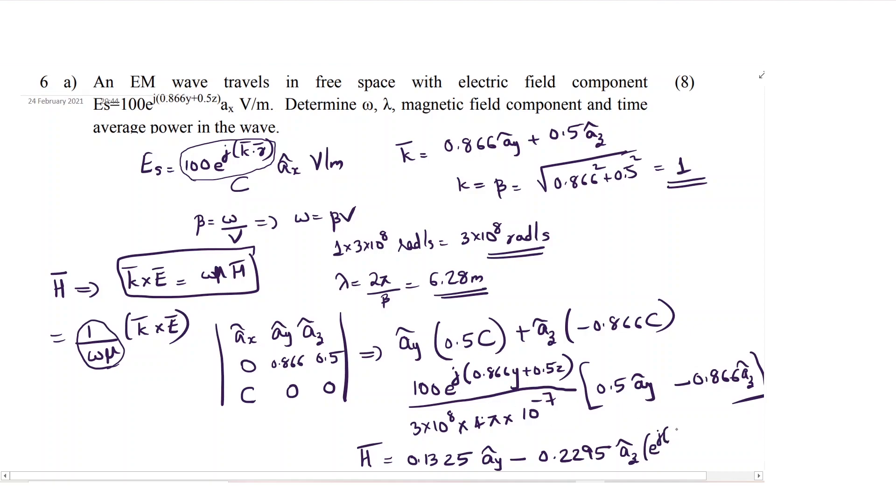Into e raise to, this e raise to j term, e raise to j into 0.866 y plus 0.5 z ampere per meter. This is the final answer. You can do it and check if you are getting the final answer.